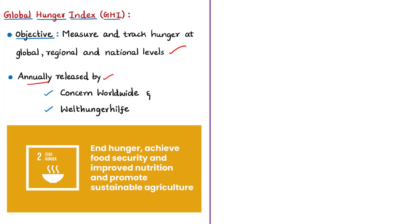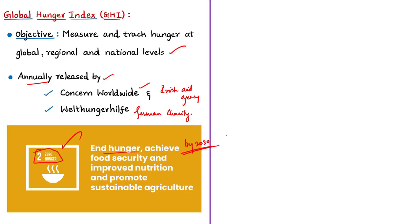This index is important in the context of Sustainable Development Goal number two, which aims to end all forms of hunger and malnutrition by 2030. A UN representative recently noted that the world is likely to miss its targets of achieving all 17 sustainable development goals by 2030. The Global Hunger Index scores are based on three dimensions of hunger covering four indicators.